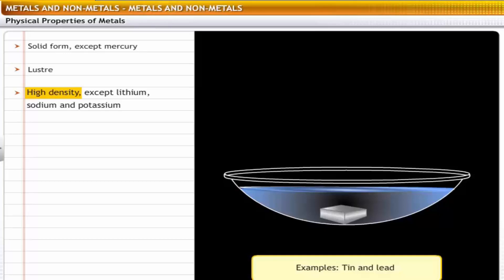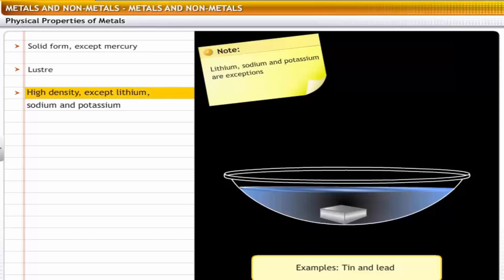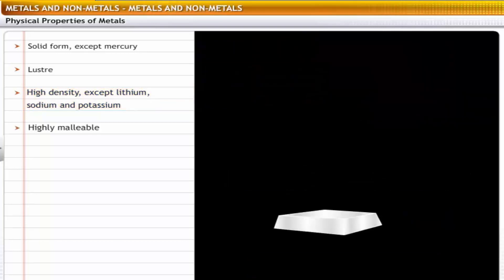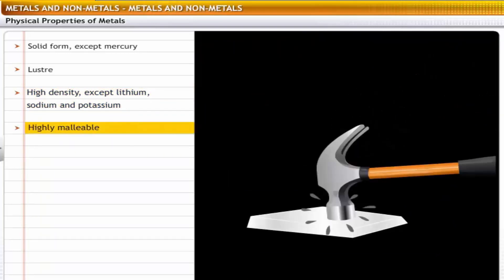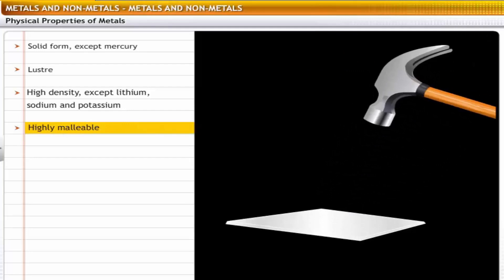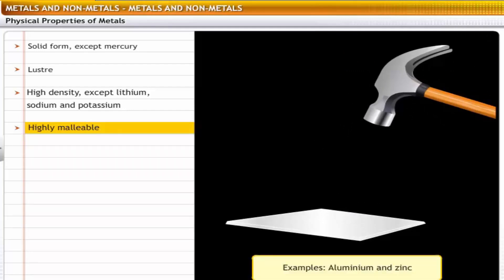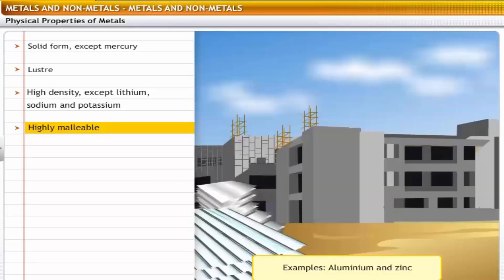For example, tin and lead sink in water. Exceptions to this rule are lithium, sodium and potassium — the density of these elements is lower than that of water and hence they do not sink. Metals are highly malleable and can be beaten into thin sheets. For example, aluminum and zinc can be rolled into thin sheets, making them suitable for use in various industries like construction and manufacturing.